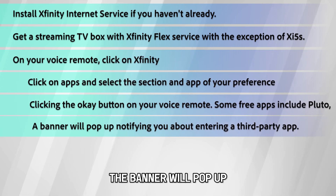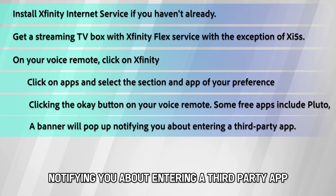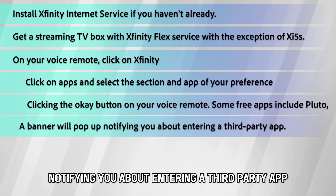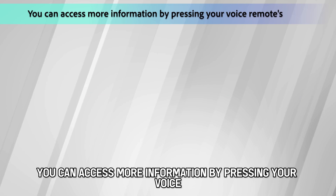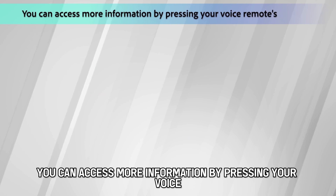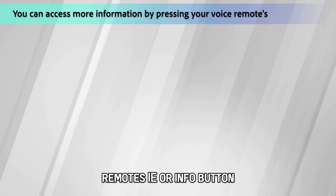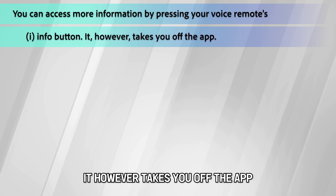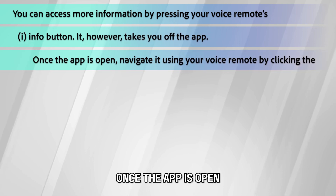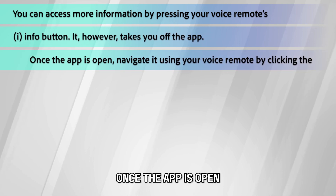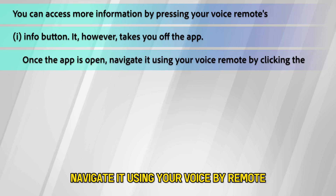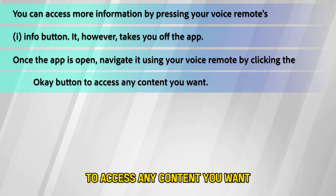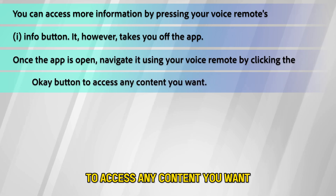A banner will pop up notifying you about entering a third-party app. You can access more information by pressing your voice remote's I or Info button; it, however, takes you off the app. Once the app is open, navigate it using your voice remote by clicking the OK button to access any content you want.